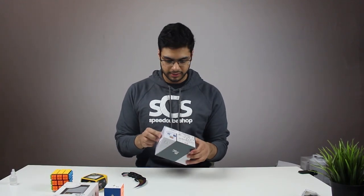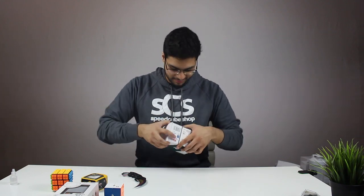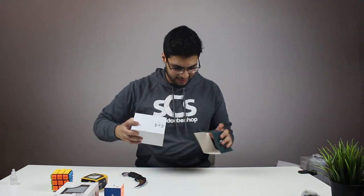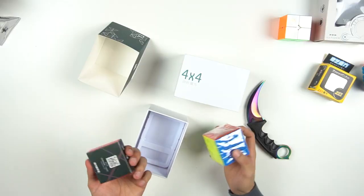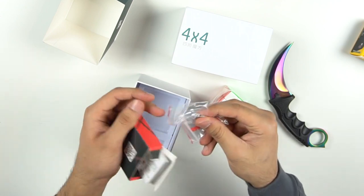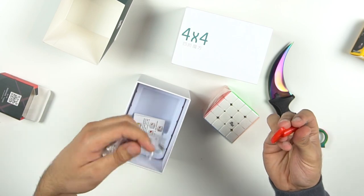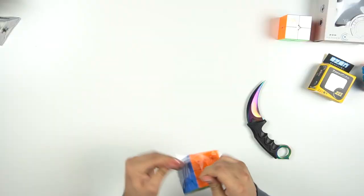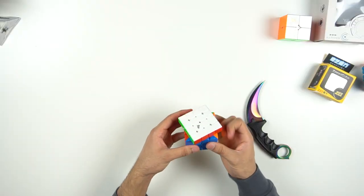Onto the YJ MGC Elite 4x4. Yeah, the box, like it's a cool design, but why does it have to be so confusing? I'm gonna slide the sleeve off first and then this. Okay, it's cool. Same idea with this, you got a YJ screwdriver. You got one set of... no, you have two sets of springs, the other one's up here. And then you have extra magnets as well. And you got the two different magnet sizes, one for the inner layers, one for the outer layers.